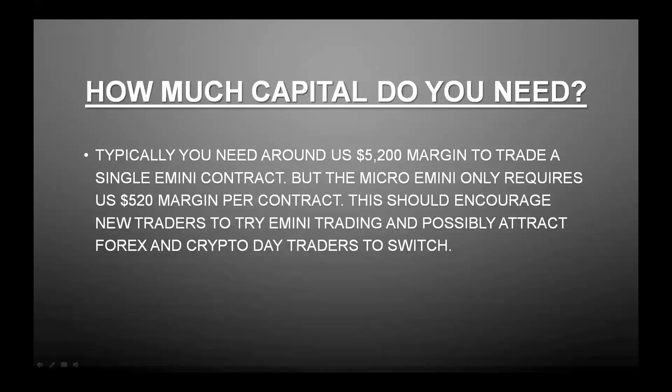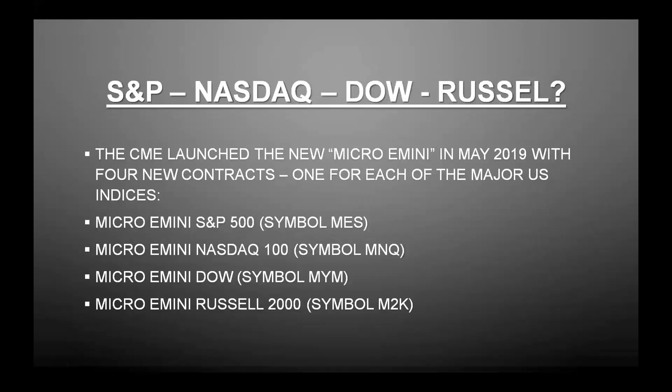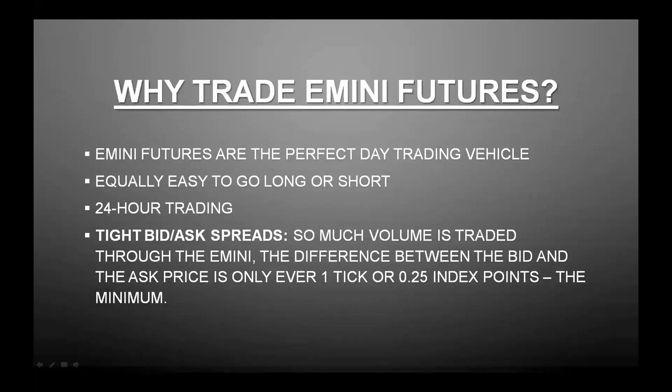The math really helps out with the margin. For trading the E-mini ES, you're looking at around $5,200 for one contract. But the micro E-mini's margin is $520 — one-tenth the size — which encourages a lot of people to go out there and try their best with the micro. They've also launched additional symbols with the micro: not only the micro E-mini ES, but the micro E-mini NASDAQ, the micro E-mini Dow, and the micro E-mini Russell.